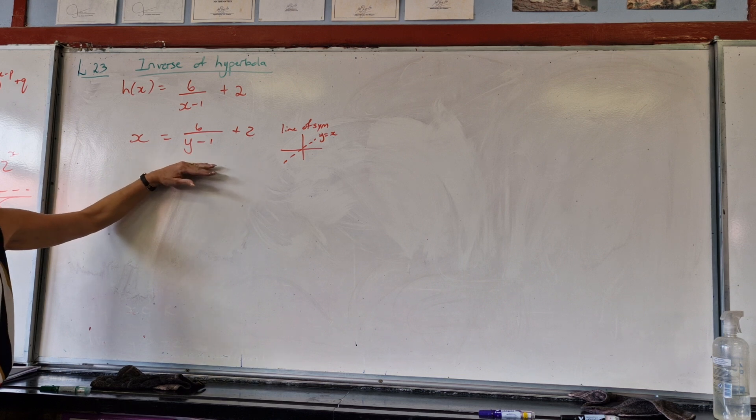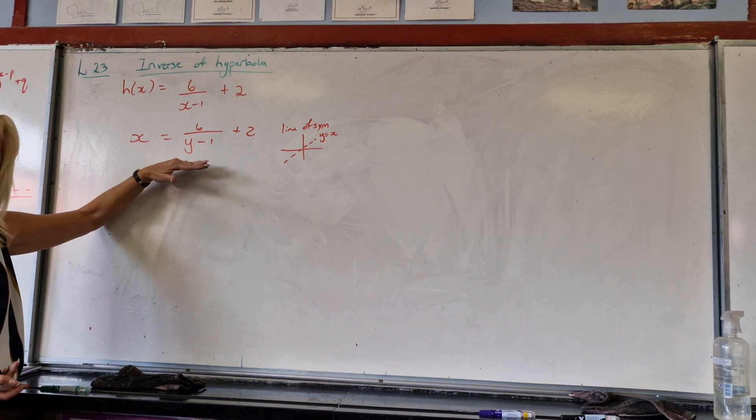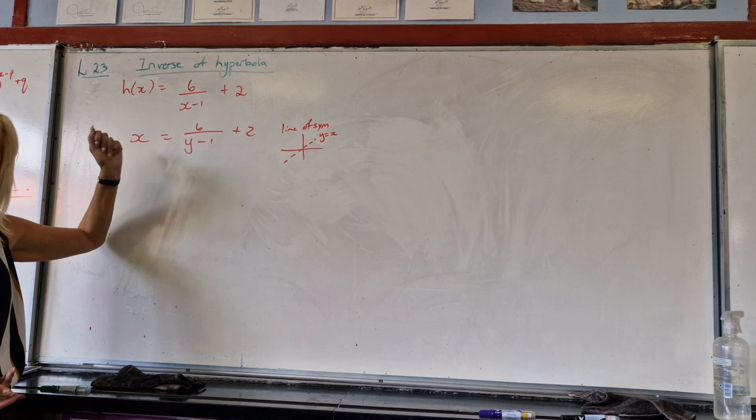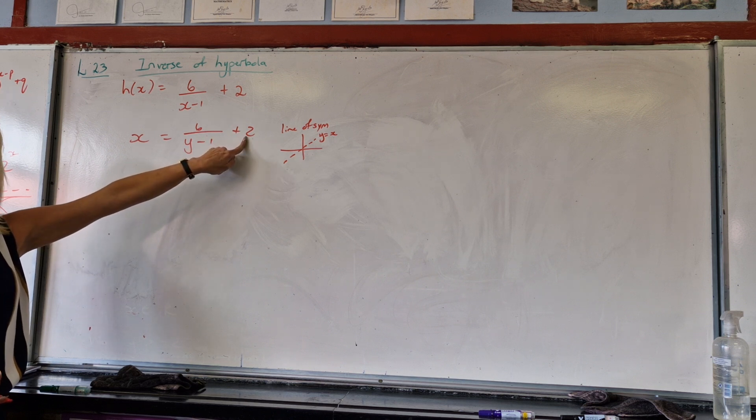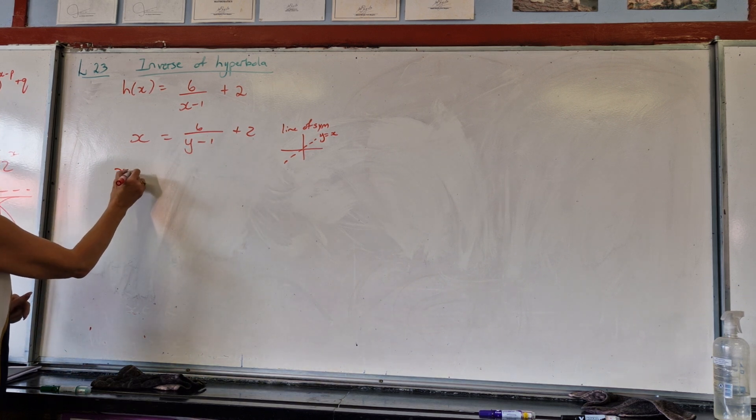Will I leave the equation like this? Never, I'll always take it back to y equal, so there's the y I'm looking for. So what are we going to do first? Take the 2 across, it becomes? Yes, 2 is minus 2.